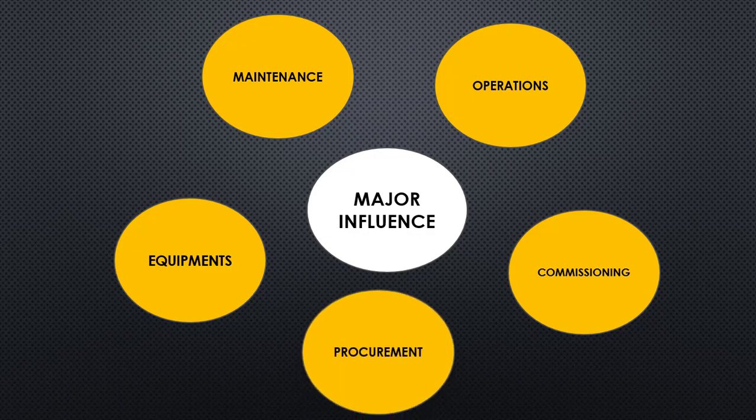The last influencing area is procurement — the process of buying or arranging material. This process has many activities: writing a material specification, sending requests to vendors, receiving and evaluating quotations, approving vendor drawings, sending them back to vendors, receiving materials, and checking whether the material meets the specification. A piping design engineer should be aware of this process sequence to check material status.